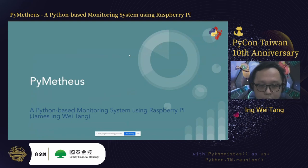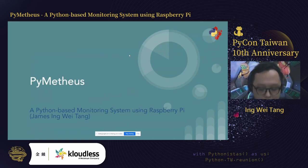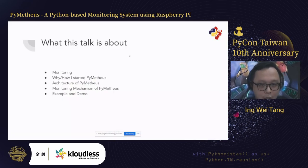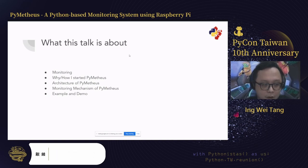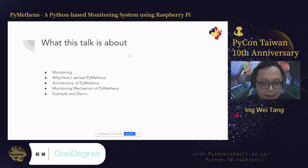Today my talk is about my own project, Pimetios — a Python-based monitoring system using Raspberry Pi. The name is borrowed from Prometheus. This talk will focus on monitoring, my motivation to start this project, the architecture of Pimetios, the monitoring mechanisms behind it, and I'll end with an example and demo.